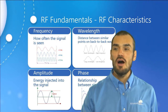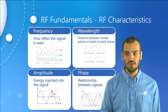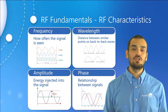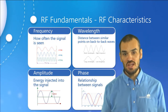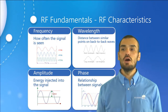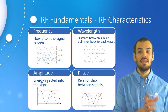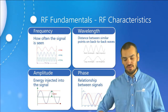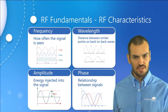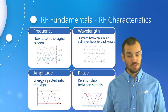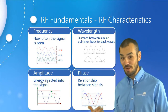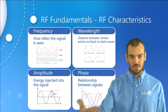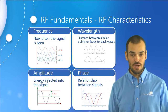Frequency is how often the radio wave occurs — how often the signal is seen by the transmitting and receiving equipment. The standard measurement for frequency is the hertz (Hz). Lower frequencies travel further in the air than higher frequencies, but higher frequencies tend to be more powerful. The analogy is running versus walking: running is faster and more powerful, but most of us can walk for several miles whereas we may only run one or two. Lower frequencies travel further; higher frequencies are more powerful but don't travel as far.